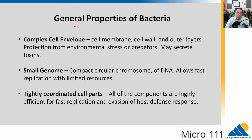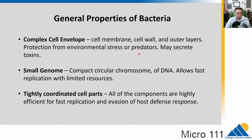Bacteria have a couple of general properties. They have a very complex cell envelope — that's the cell membrane, the cell wall, and any outer layers. This provides protection from the environment: salty environments, acidic, hot environments, and even predators — yes, there are predators for bacteria. Also, the cell envelope can secrete toxins or have things that allow bacteria to get into cells in the case of pathogens.